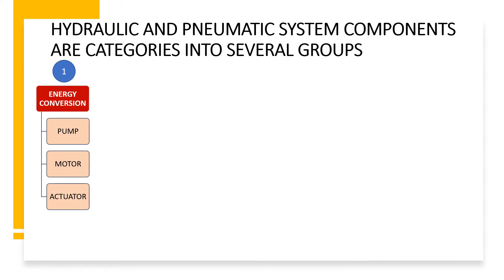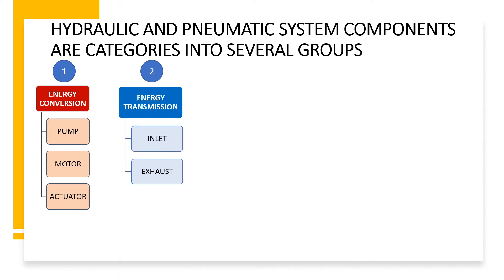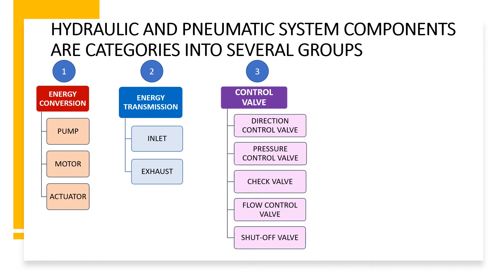After energy conversion, energy is transmitted to various components with the help of hose pipes in hydraulic systems and with the help of pipes in pneumatic systems. There are two types: the inlet system, in which energy is supplied for doing work, and the exhaust, in which energy is released. The third group is control valves, which are used for controlling the direction of fluid, the pressure of fluid, and the flow of fluid.